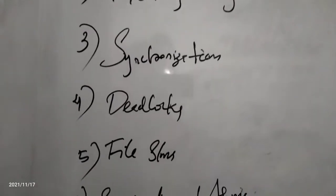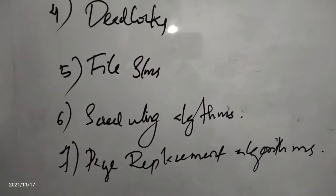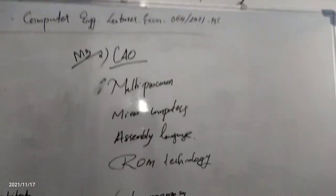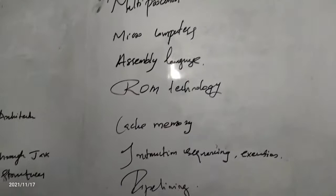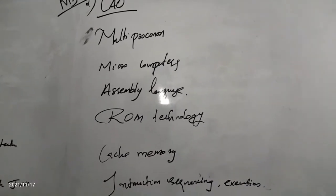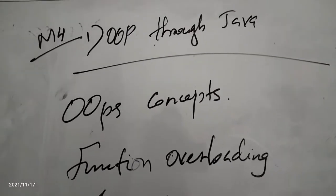OS topics include types of OS, memory management, synchronization, file systems, scheduling algorithms, and page replacement algorithms. Computer organization and architecture covers multiprocessor, microcomputer, assembly language, ROM technology, instruction sequencing, cache memory, and pipelining.